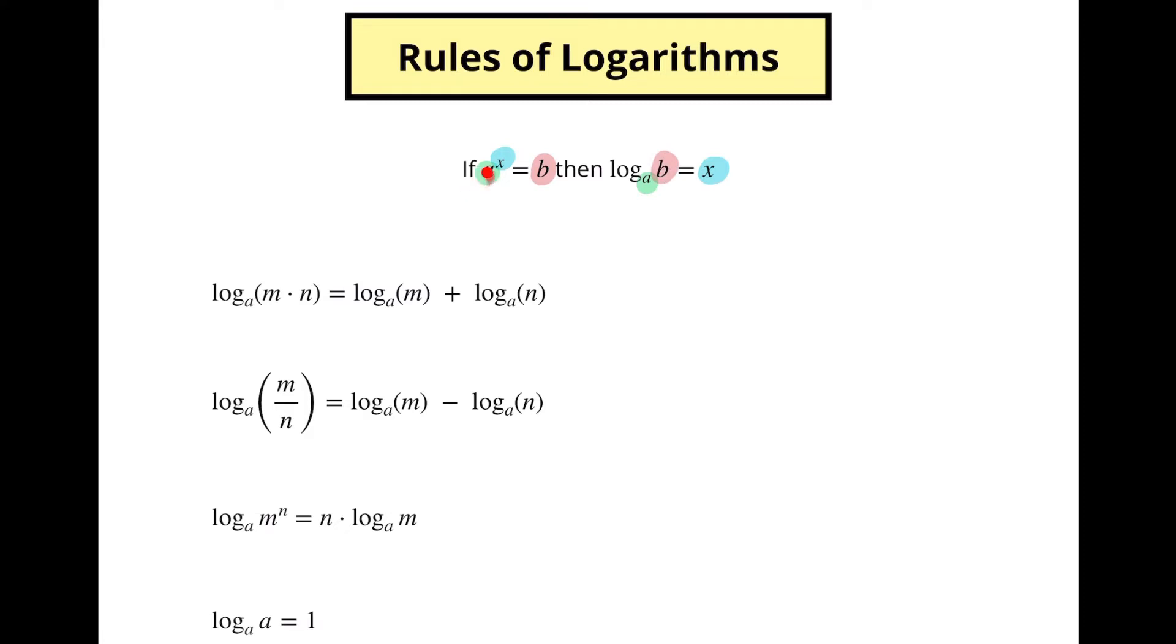But basically what this is saying is if we've got some number to a power, then we're going to get a result. The logarithm just kind of undoes that so we can solve for what's in the exponent. So notice out here, if we calculate a logarithm, we end up getting that result.